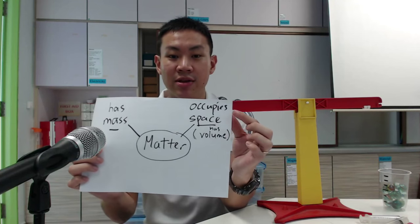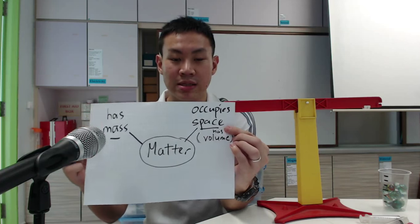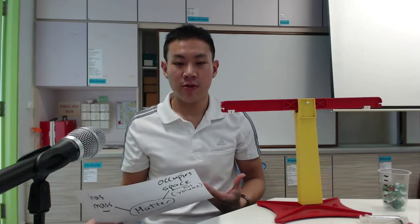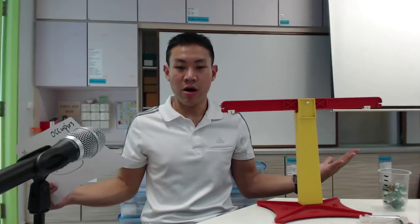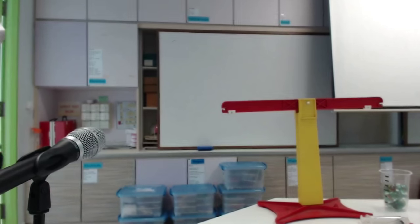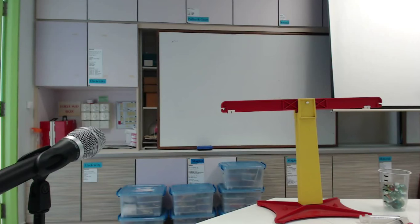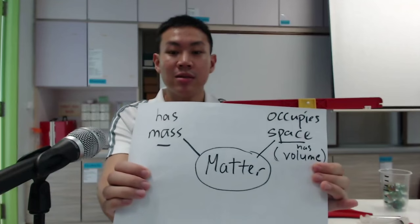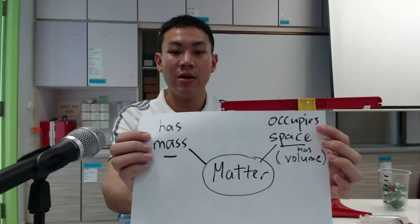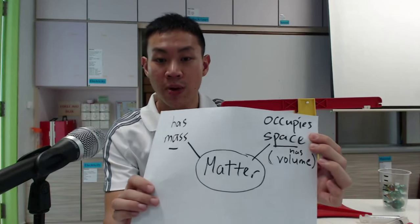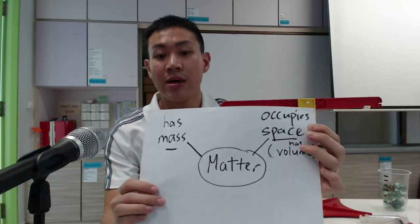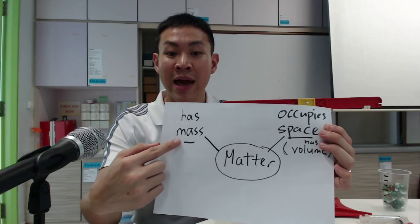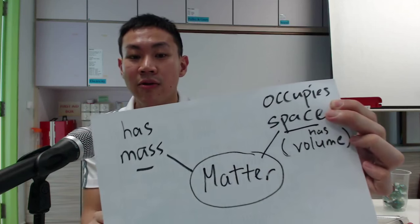Matter is basically anything that has mass and occupies space. Right now I'm sitting in front of you, I'm occupying a certain amount of space. If I move out of this chair, I'm no longer occupying that space. So I am matter — and it's not just for non-living things but for living things as well. Another word for 'occupy space' is volume. So matter has mass and it has volume.